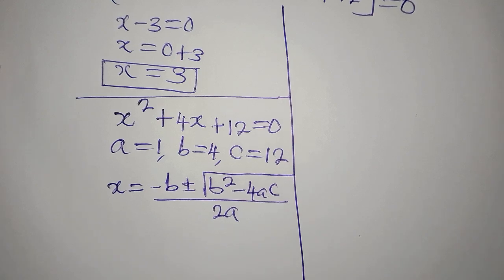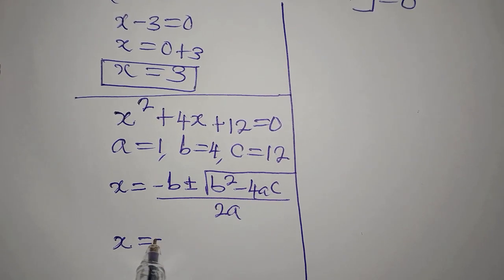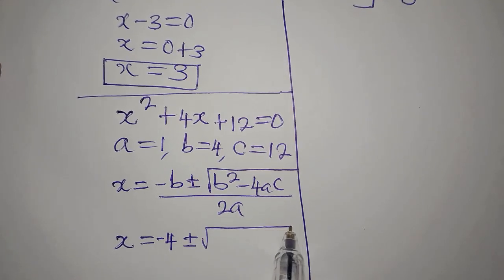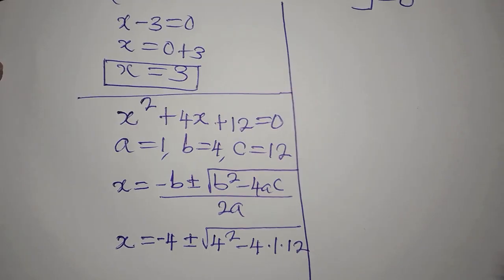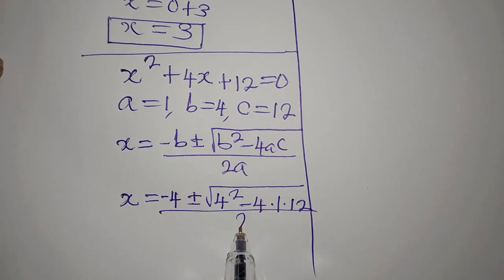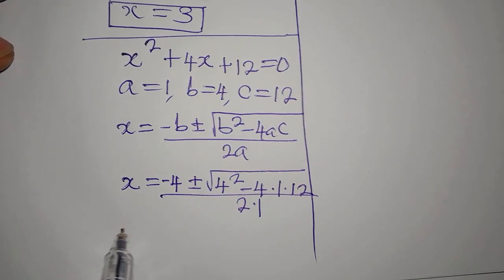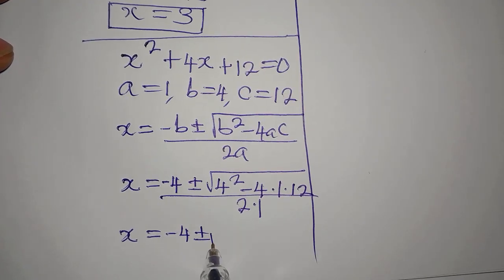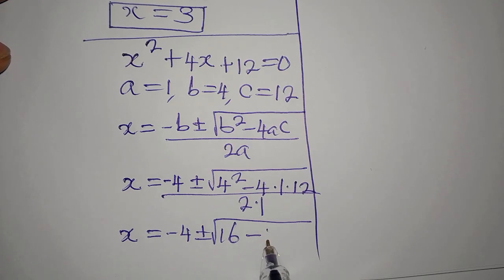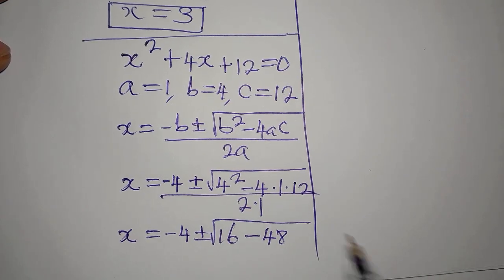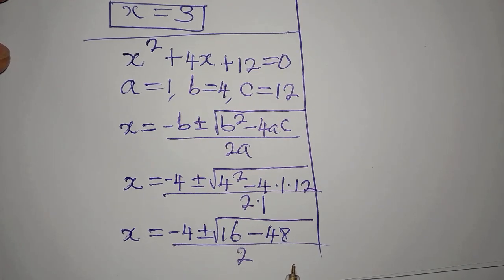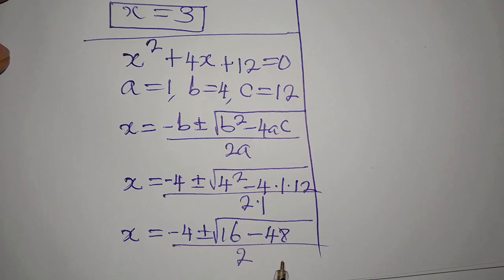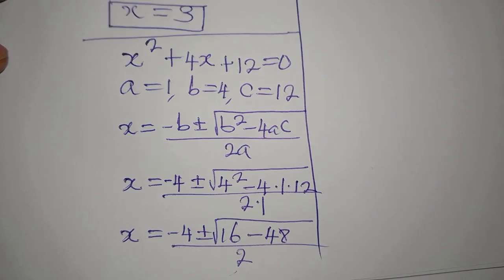Substituting: x equals minus 4 plus or minus the square root of 4² minus 4 times 1 times 12, divided by 2 times 1. That gives us the square root of 16 minus 48, divided by 2, which simplifies to the square root of minus 32, divided by 2.